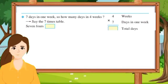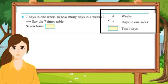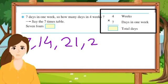Next problem: 7 days in 1 week, so how many days in 4 weeks? One week has 7 days, so in 4 weeks how many days will there be? We need to do multiplication. 4 weeks multiply by 7 days in 1 week. Say 7 times table: 7 fours are 28. The answer is 28.